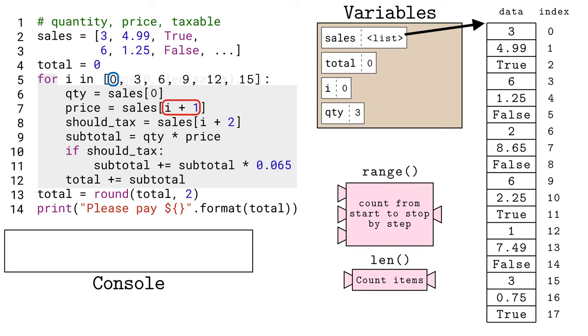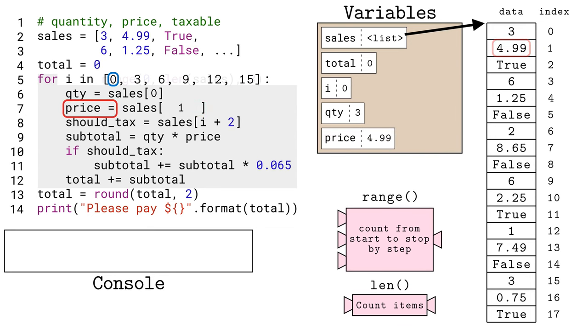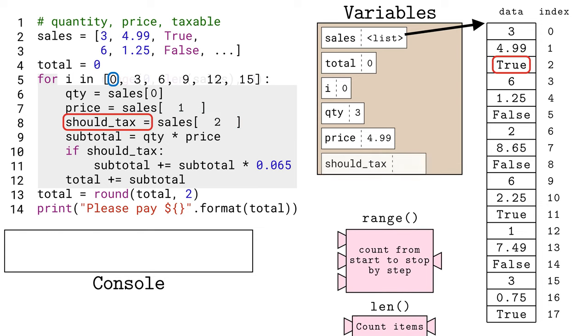The next line uses i plus one and square brackets to get the next element from sales at index one, and saves it to the variable price. Then we use i plus two and square brackets to get the next next element from sales at index two, and store it to the variable should tax.